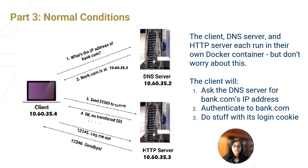Let's first understand what happens under normal conditions. The client, DNS server, and HTTP server each run in their own Docker container. The client operates in a straightforward manner, just like we would expect in a real-world scenario. The first task is to ask the DNS server for bank.com's IP address — a fundamental step in reaching any website on the internet. Once the client has the IP address, it authenticates to bank.com, providing credentials. After successful authentication, the client proceeds to perform various actions using its login cookie, which is crucial for maintaining the user's session and accessing secure areas of the website.